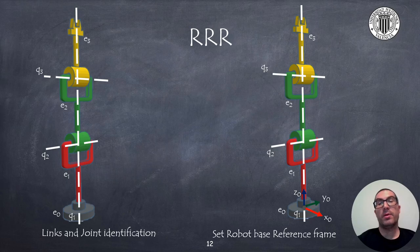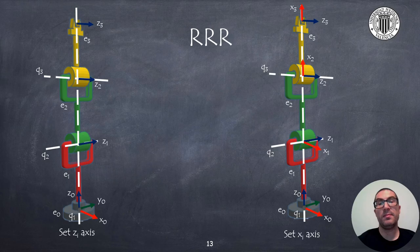The RRR robot has three revolute joints. Its structure is exactly the same as the first three joints of the vast majority of industrial robot manipulators. Joint 1 is a vertical joint, while joints 2 and 3 are horizontal and parallel. Following the previous ideas, we first identify the links and joints, then set the position of reference frame 0. The Z axis always points in the direction of the next joint, and the X axes are always perpendicular to the Z axis and also to the previous joint axis.